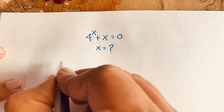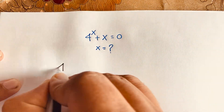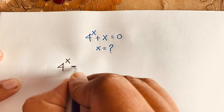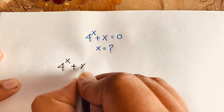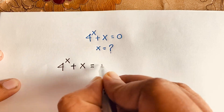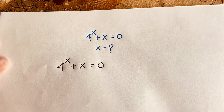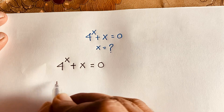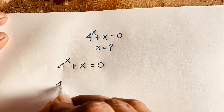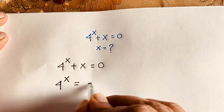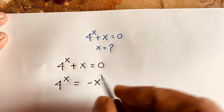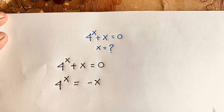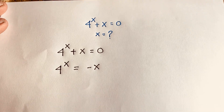Our question is: 4 to the power x plus x is equal to 0. We can see that 4 to the power x is equal to negative x — I just move x to this side, so it becomes negative x.